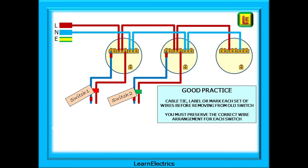We need to take the existing two-gang switch out of circuit. It is good practice when removing wires from switches to cable tie, label, or mark each set of wires so that it is easy to see which set of wires belong to each other when we come to wire up the new switch. You must preserve the correct wire arrangement for each switch if you want them to function correctly at the end of the job.